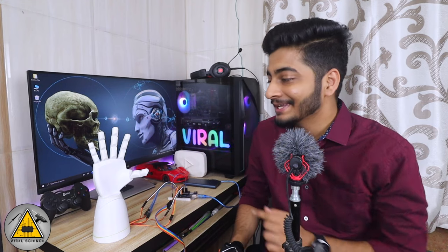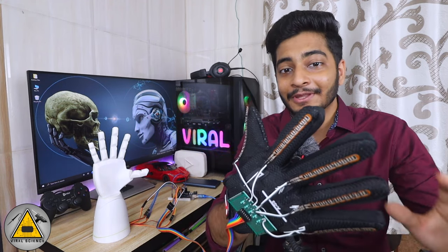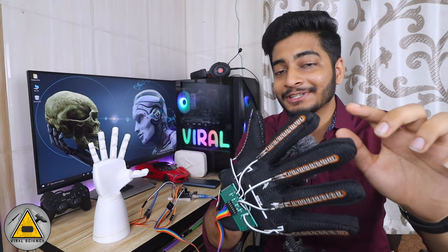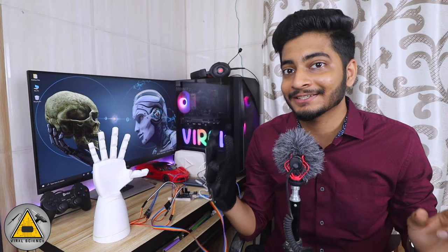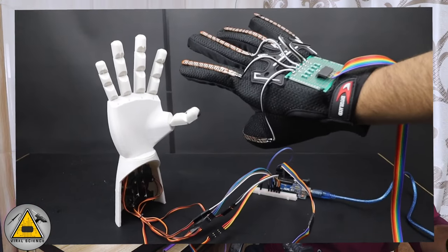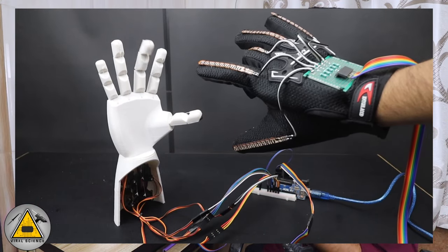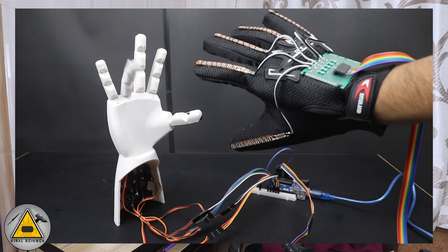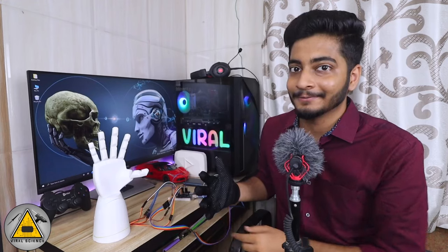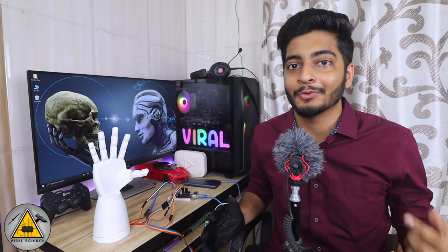In this video I'll show you how to make this robo hand which can be controlled with this glove. This glove has some flex sensors on each of the fingers, and when the sensor is bent it changes its resistance value. We are using this value as an input through Arduino and using servo motors to control the fingers of this robo hand.